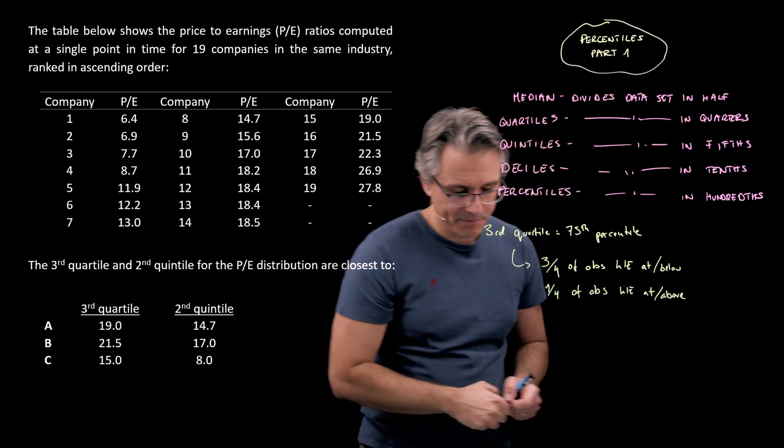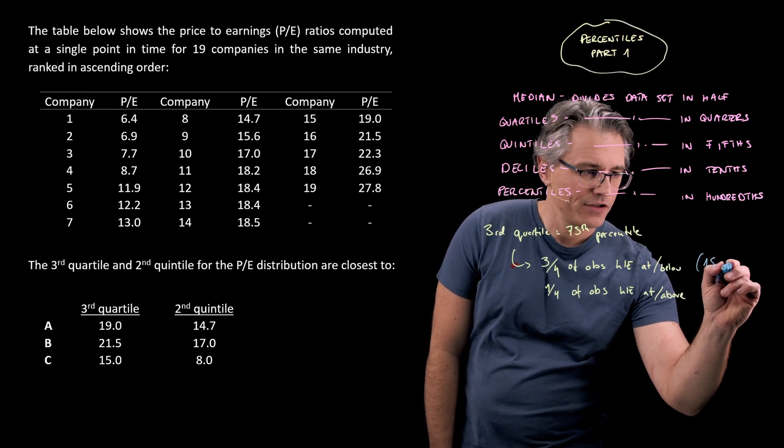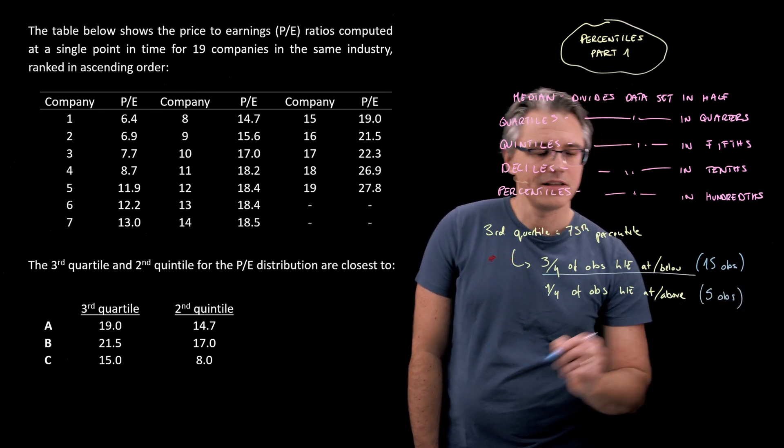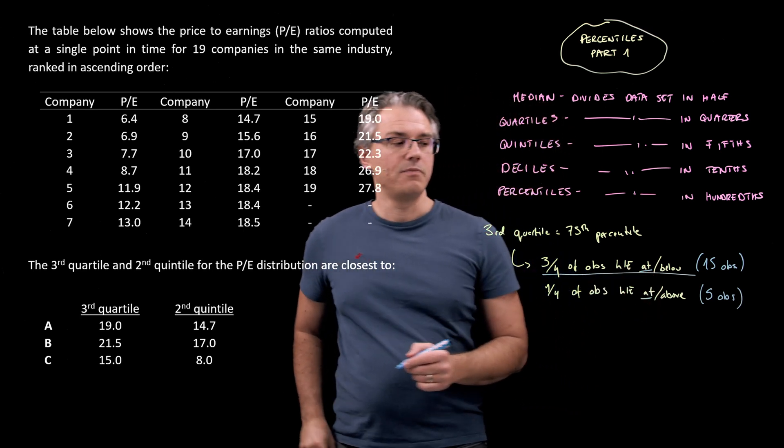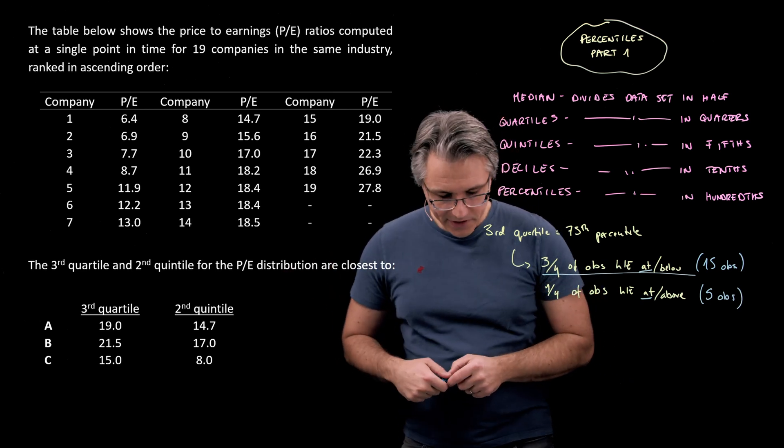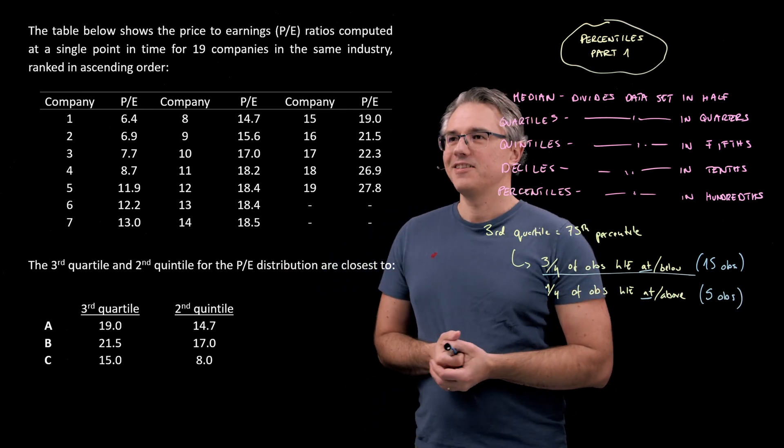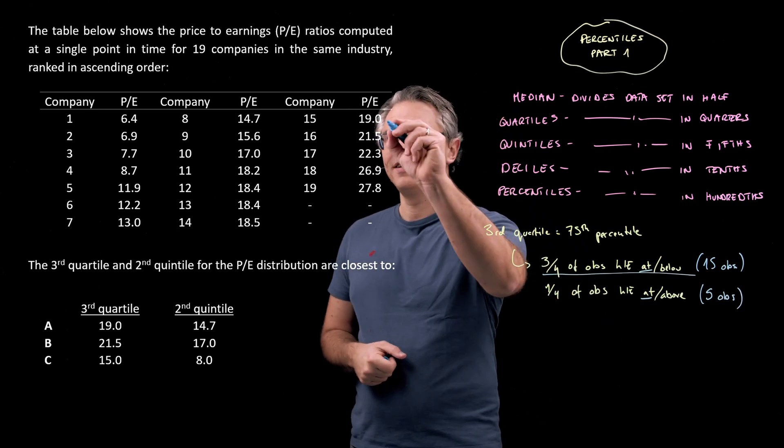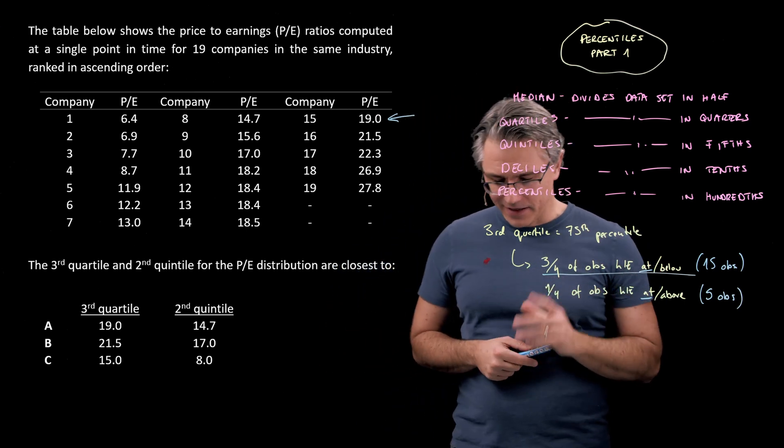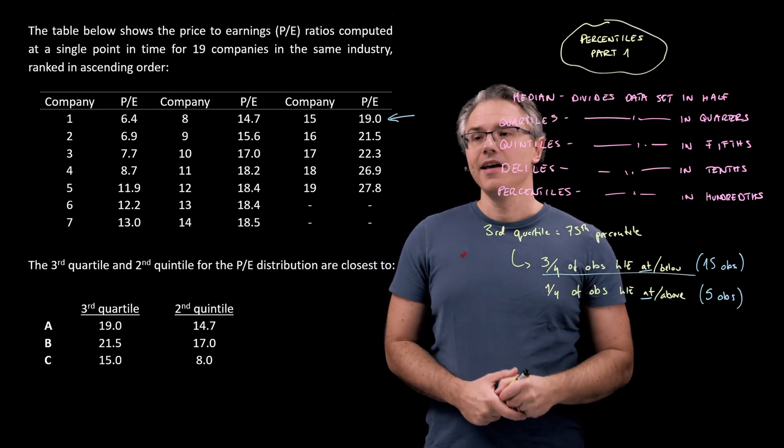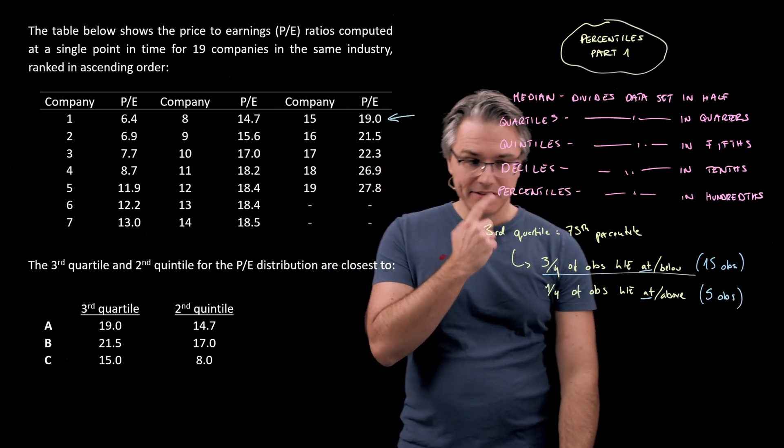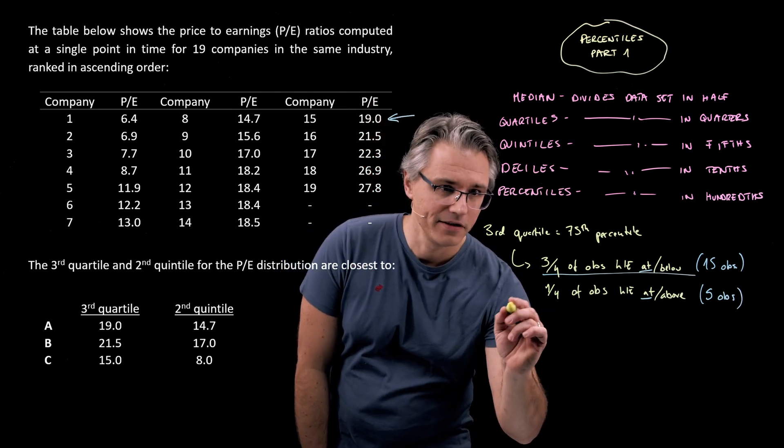Now, given that we've got 19 observations in total, and the quartile appears as both three-quarters at or below and one-quarter at or above, we're going to be looking at something where 15 observations fit this criterion and 5 observations this one, because the 'at' appears twice. It will naturally be observation number 15, which is this one with a value of 19. And that pretty much solves the question, doesn't it? Because the answer has to be answer A, which says the third quartile is 19.